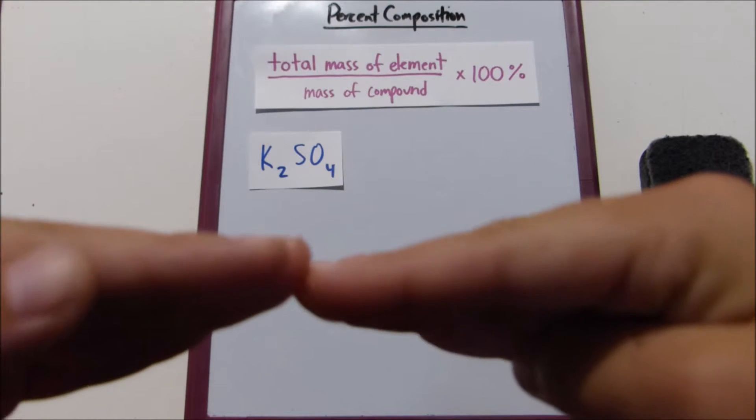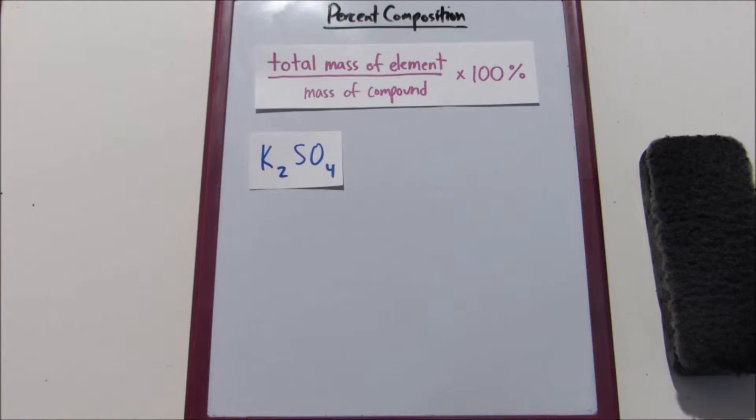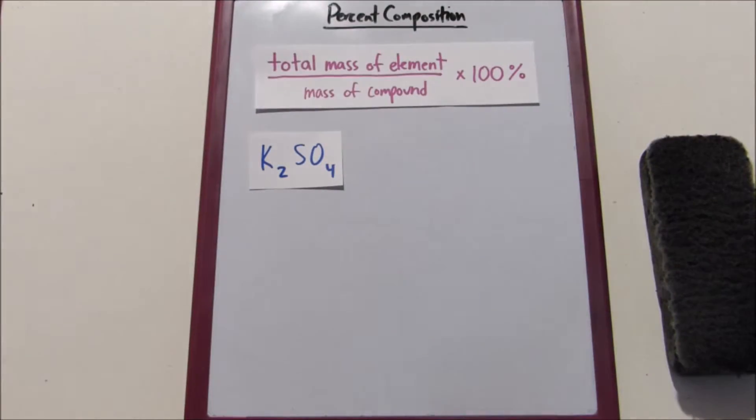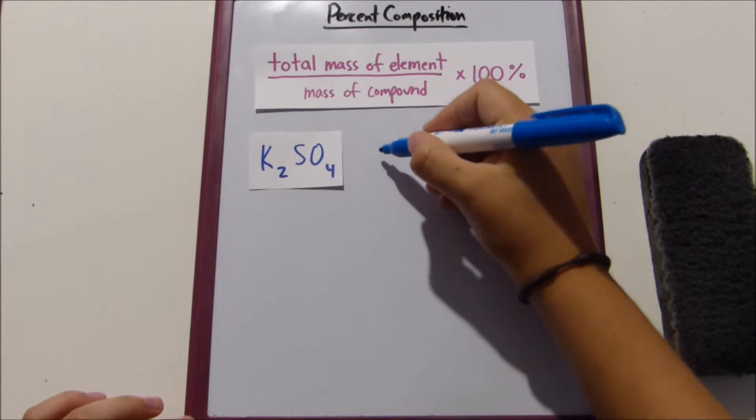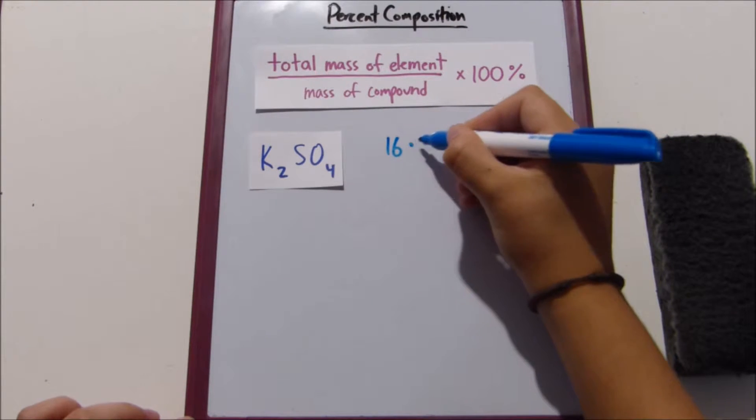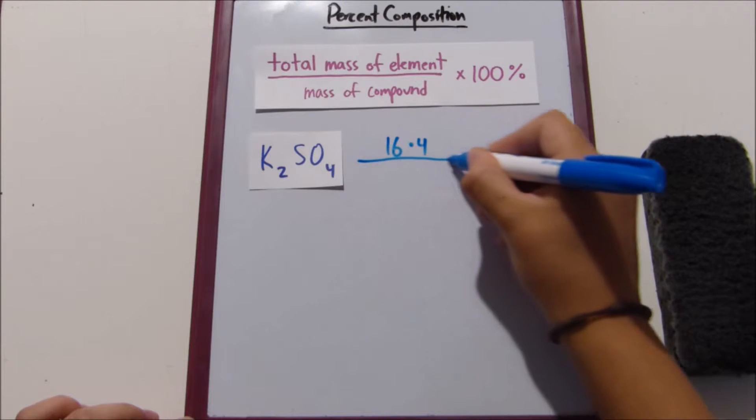And we just put that all on the bottom and multiply it by 100. So what we do is we go to our handy-dandy periodic table and we find the mass of oxygen, which rounded up is about 16. And then since we have four of those atoms, we multiply it by 4.